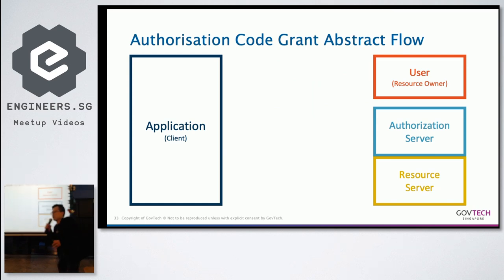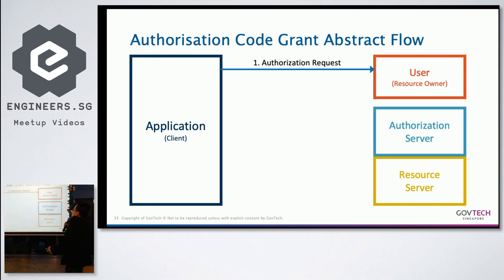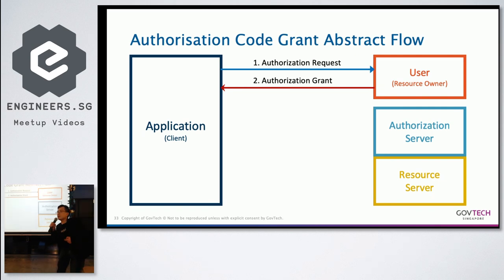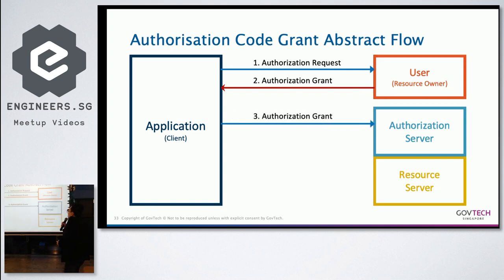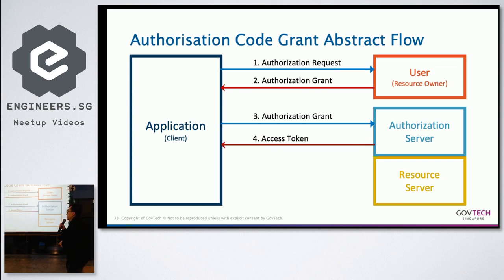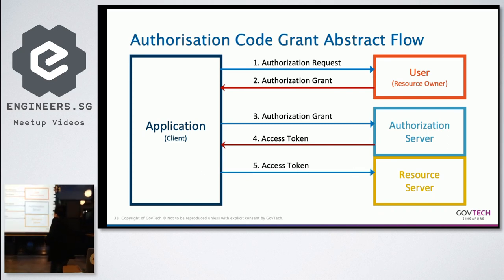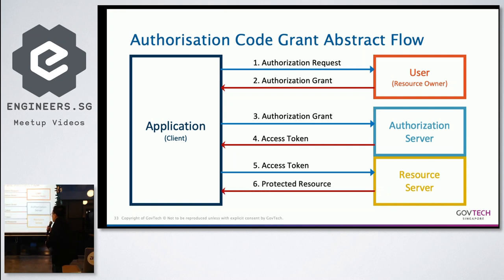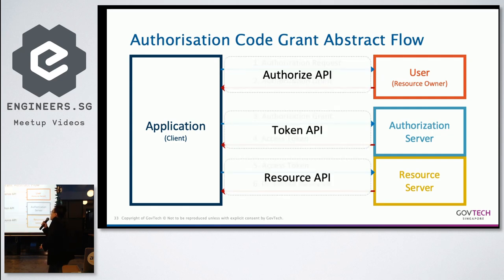In the OAuth authorization code grant abstract flow: an application requests authorization from the resource owner; the resource owner, having established their identity, returns an authorization grant (usually an authorization code); using the grant, the application asks the authorization server for an access token; and the access token is then used to request a protected resource that the user owns. The protected resource is returned to the client. We implement this using three APIs: Authorize, Token, and the resource API we call Person.